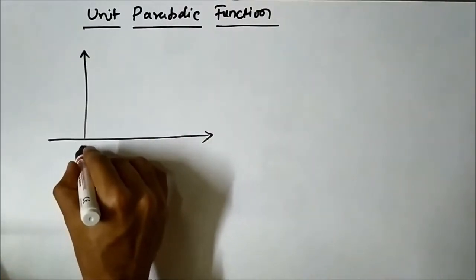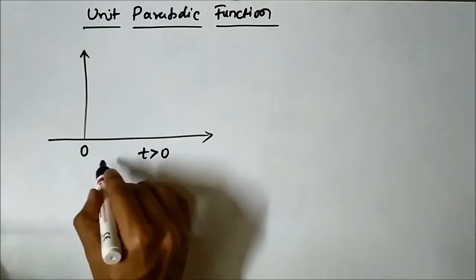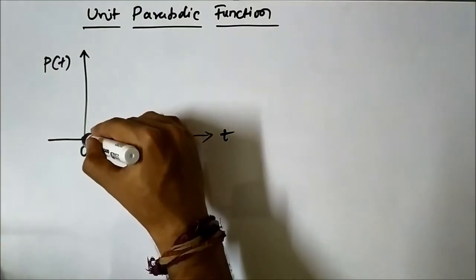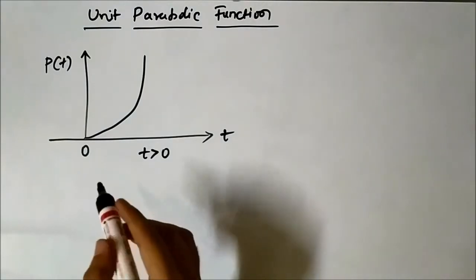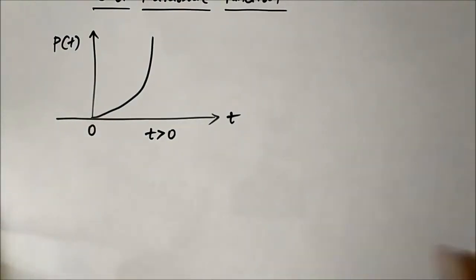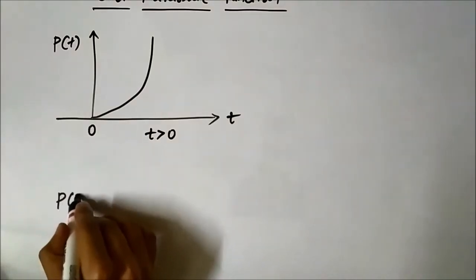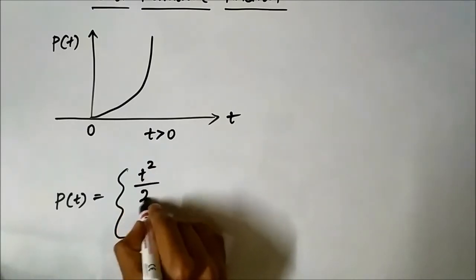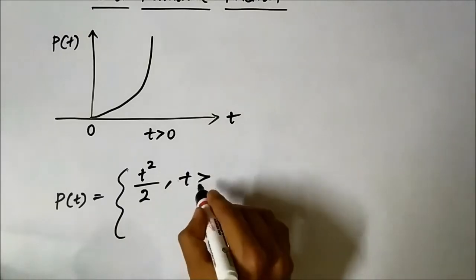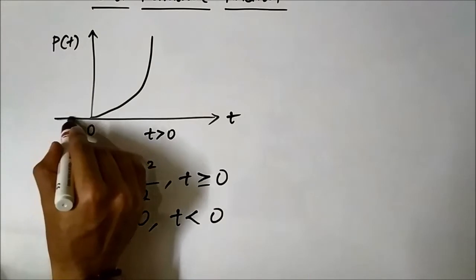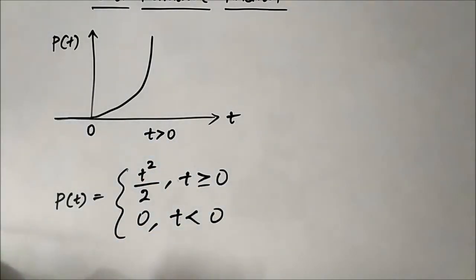Again, like all other elementary signals, it exists only for positive time, that is for t greater than or equal to 0. This is the parabolic function p(t), and its shape is something like this. The functional representation of the parabolic function is: it is t² / 2 for time greater than or equal to 0, and 0 for negative time, that is for t less than 0. This is the unit parabolic function.